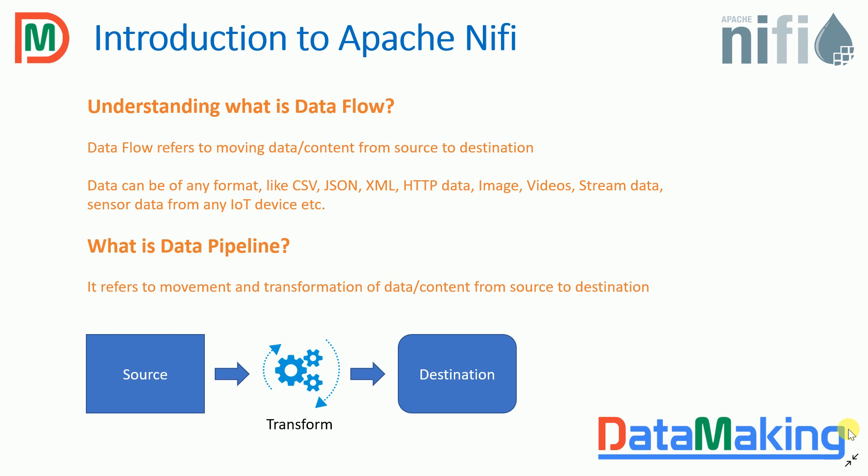What is a data pipeline? Data pipelines are not just about moving data from source to destination. We also want to do transformation — we don't just take data from one source and pump it into another. We want to change data from one format to another format, with a transformation taking place in between. This type of flow we call a data pipeline.